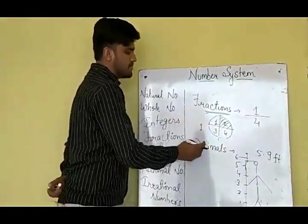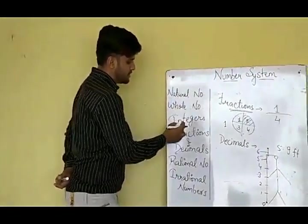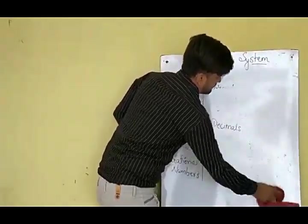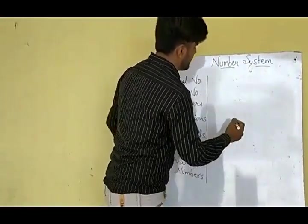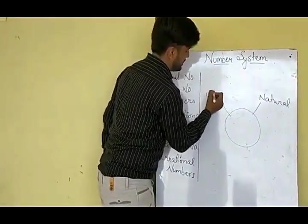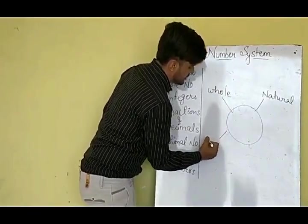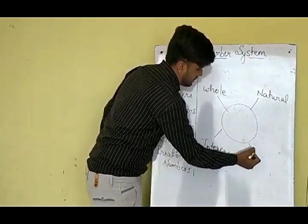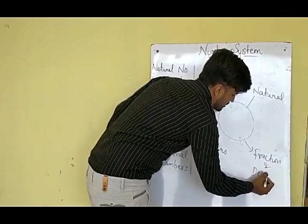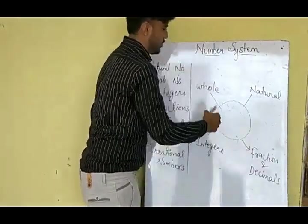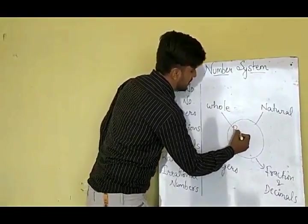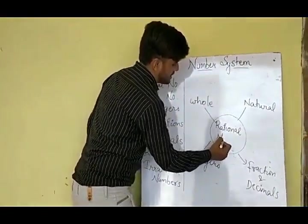So now we have a whole set: natural numbers, whole numbers, integers, fractions, and decimals. Together, all of these — whole numbers, natural numbers, fractions, decimals, and integers — are grouped as rational numbers. Together, they are called rational numbers.